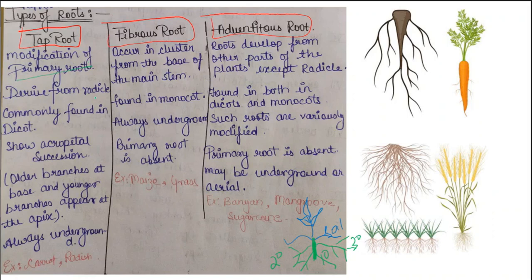Tap root is always derived from the radicle, and it is mostly a characteristic of dicot plants — you will commonly see the tap root system in dicot plants. Tap root shows acropetal succession, meaning older roots come first and new growth arises at the tips. As you can see in the diagram, the older branches are on either side and new branches arise from the tip — this arrangement is called acropetal pattern.